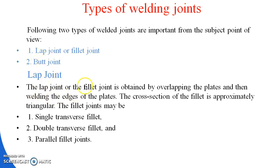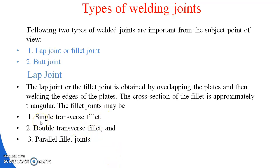The lap joint or fillet joint is obtained by overlapping the plates and then welding the edges of the plates. The cross section of the fillet is approximately triangular. The fillet joint may be classified into three types: single transverse fillet joint, double transverse fillet joint, and parallel fillet joint.